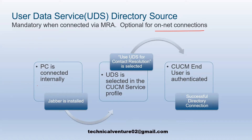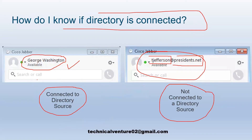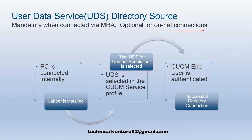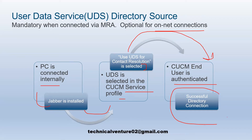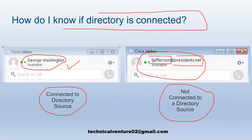From this example, you can see the user's directory is not connected, so you need to check why. The PC is connected internally, Jabber is installed, and UDS is selected in the CCM service profile. UDS is directly linked to the end user — once the CCM end user is authenticated successfully, you will see a successful directory connection, meaning directory integration is working.